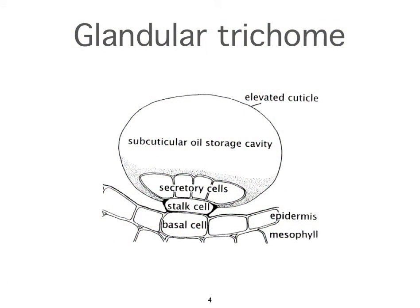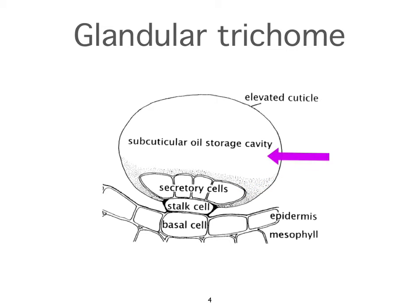A trichome is really another name for a hair on a plant. This is what they call a glandular trichome — a hair with an oil gland on the end. This hair is very, very short. Where it says stalk cell, that's the tiny hair, though in some plants it's longer. The secretory cells are the ones that create the essential oil constituents and then secrete them into the secretory cavity where the essential oil exists in the plant.